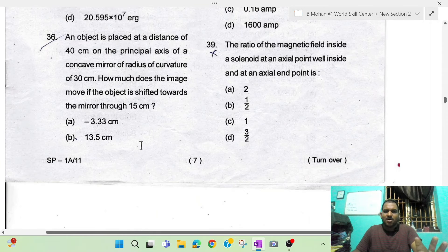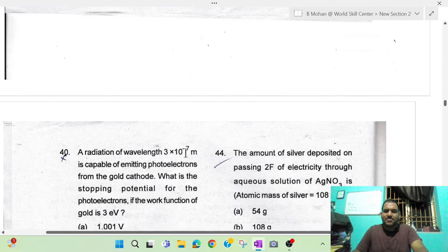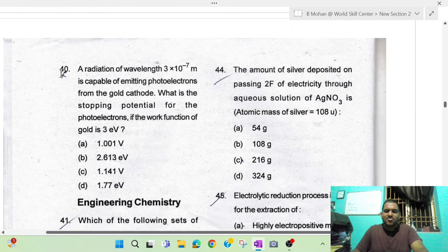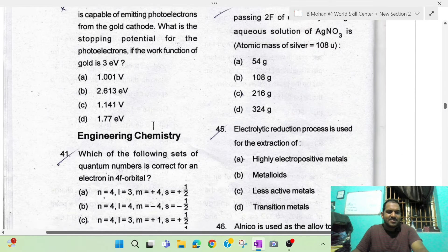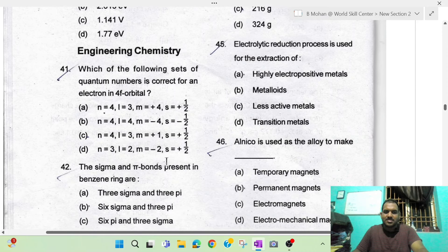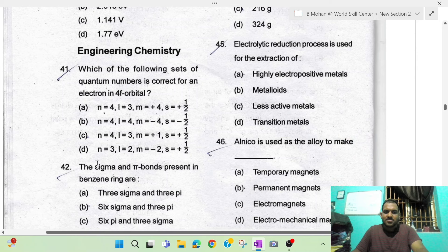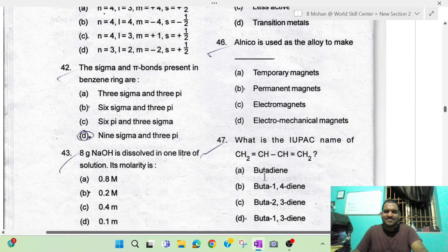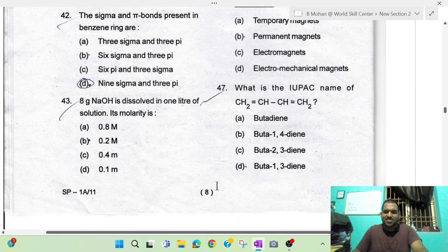Now we will observe what types of questions we have. We will see 10 questions about physics. Next, we will start with engineering chemistry, from question 42 to 46. So there are 10 questions about chemistry.